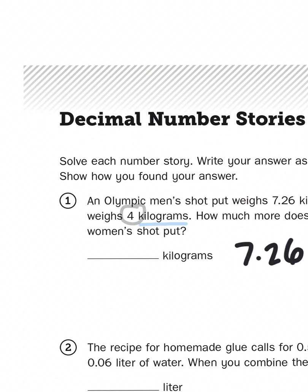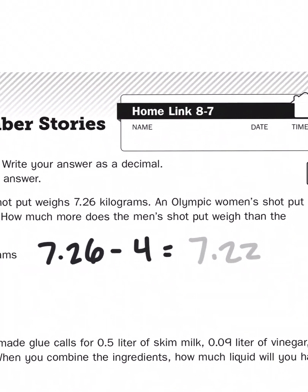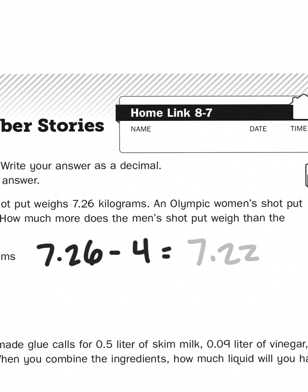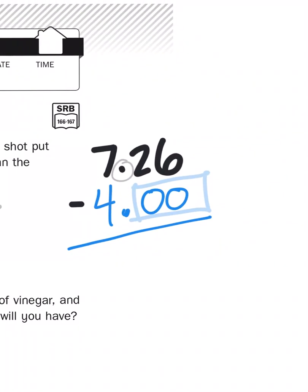When I have exactly 4 kilograms, I don't say 4 kilograms and no grams, I just say 4 kilograms. But, when I'm comparing it to an amount which has a fractional component, that's when I have to involve those zeros.